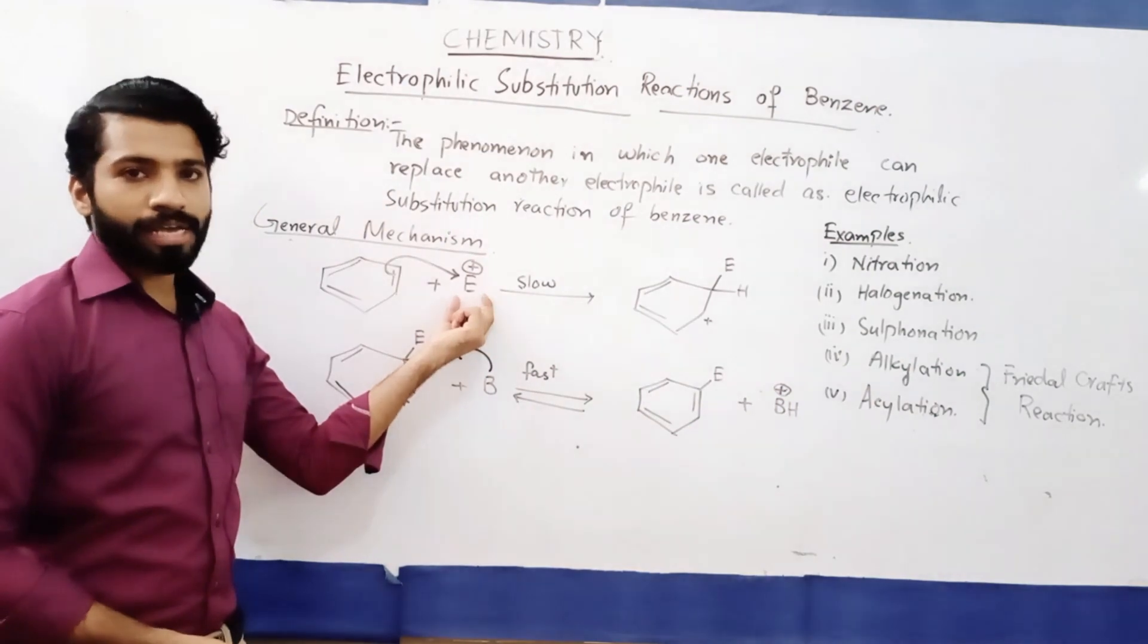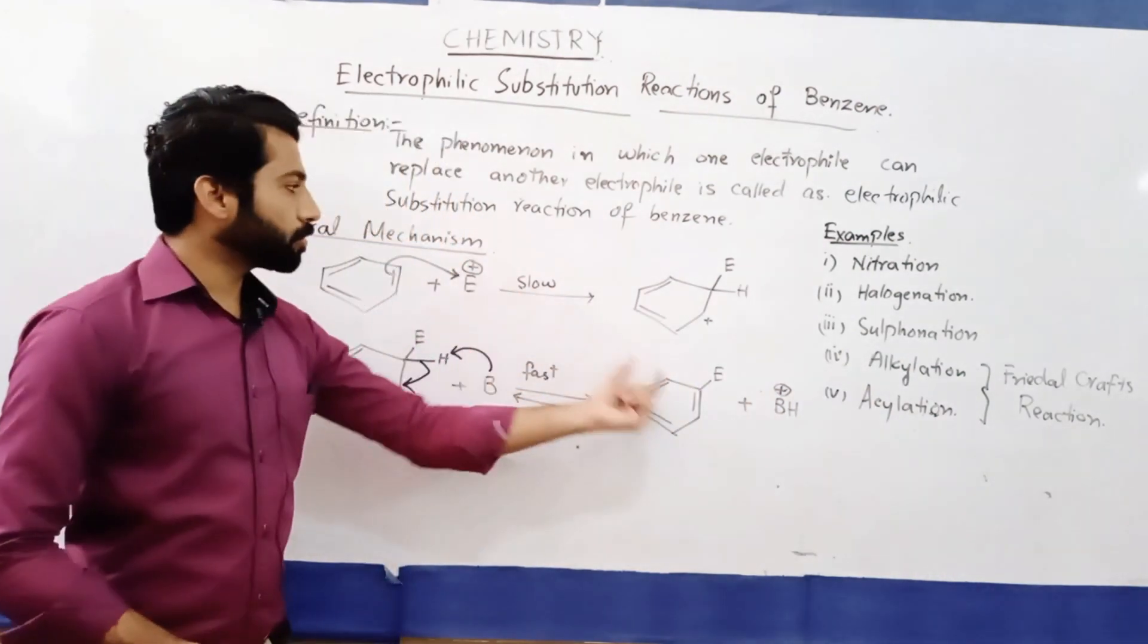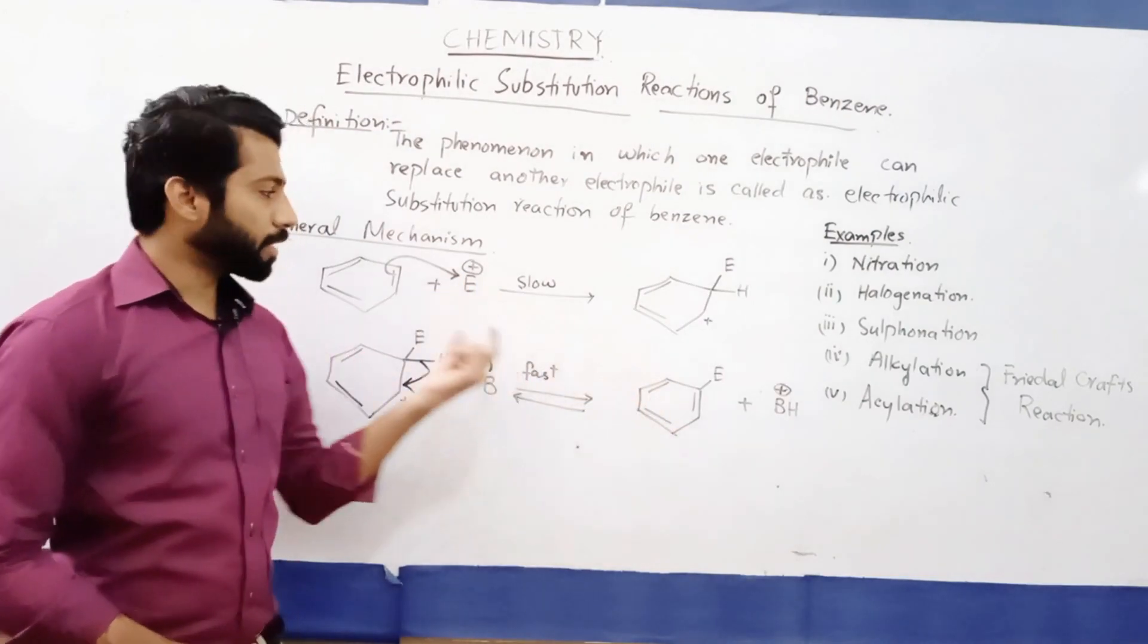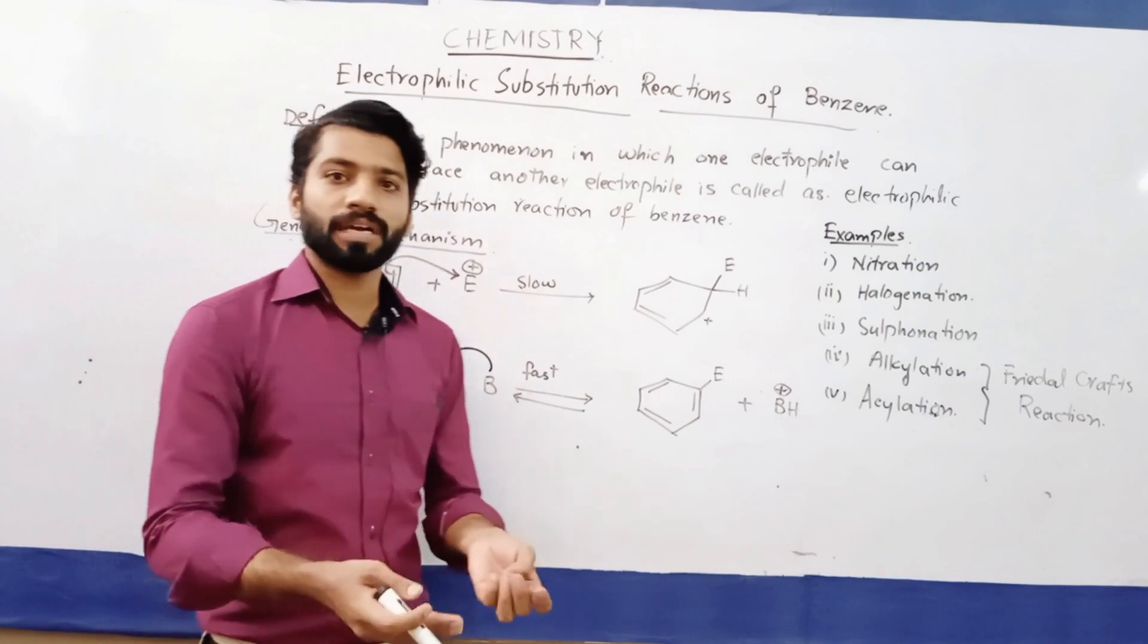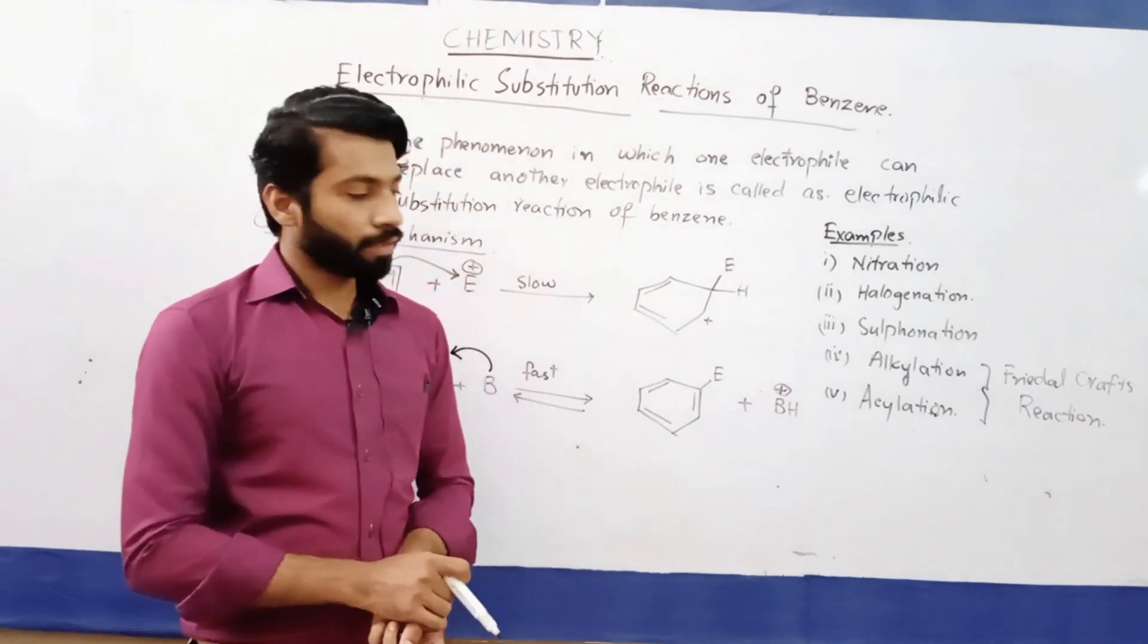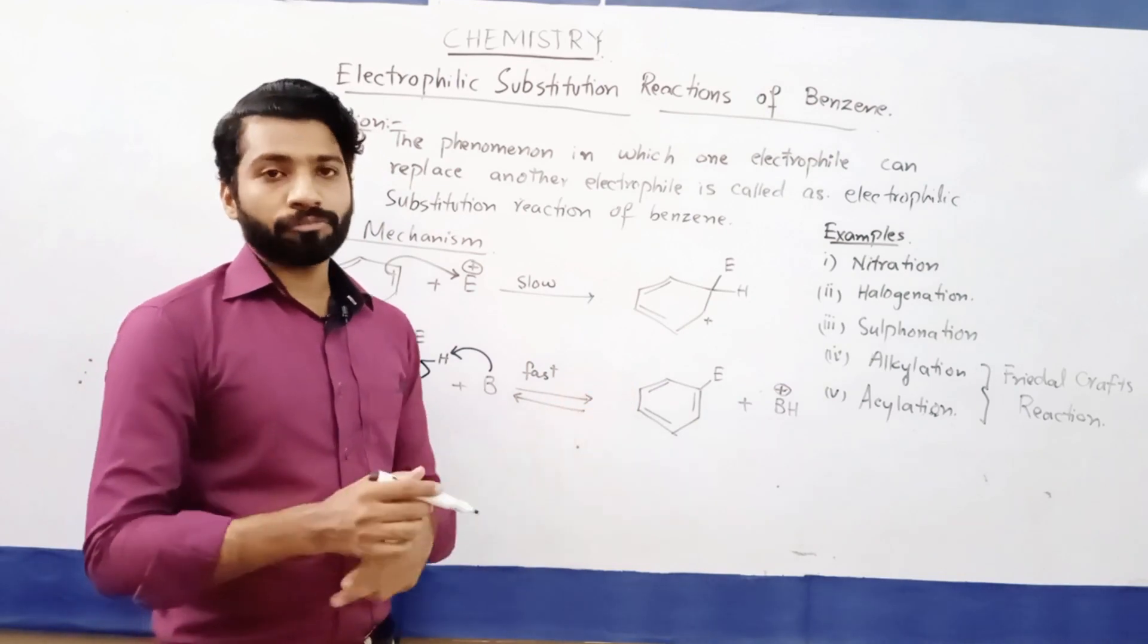What happened is that one electrophile has attacked and one electrophile has been removed. That is known as electrophilic substitution reaction. We are discussing benzene ring, so this is electrophilic substitution reaction of benzene ring. This is the general pattern of electrophilic substitution reaction.